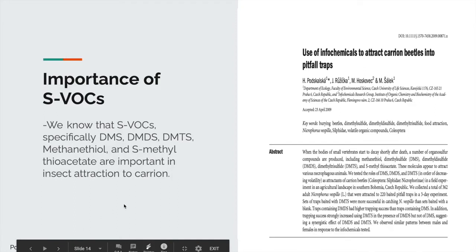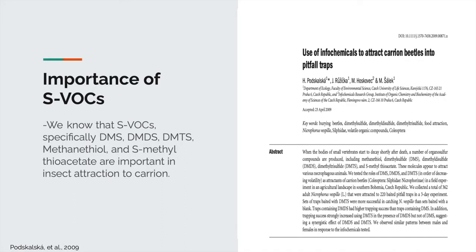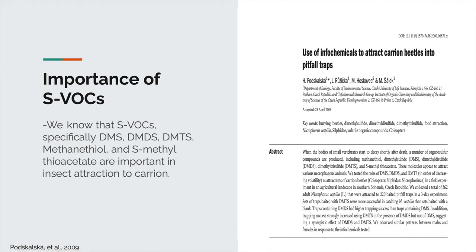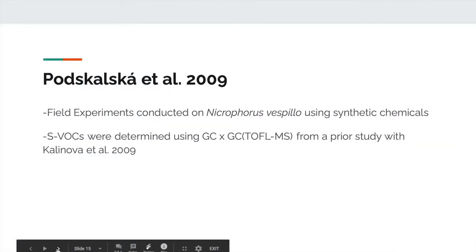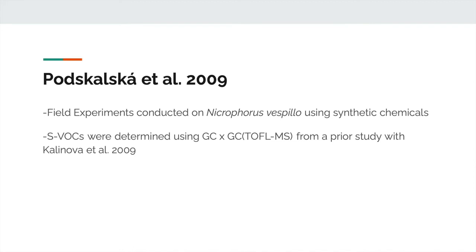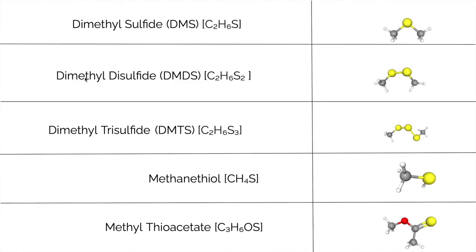There is strong evidence that dimethyl sulfide (DMS), dimethyl disulfide (DMDS), dimethyl trisulfide (DMTS), methane thiol, and S-methyl thioacetate are incredibly important to insect attraction to carrion, and are key semiochemicals helping insects discriminate between carcass age and whether it's a feeding or oviposition resource. A study by Podskalska and colleagues in 2009 conducted field experiments with Nicrophorus vespio using synthetic chemical blends. The SVOCs were determined from the Kalanova study and included DMS, DMDS, DMTS, methane thiol, and methyl thioacetate, though this experiment focused on the top three: DMS, DMDS, and DMTS.